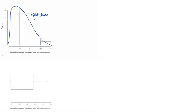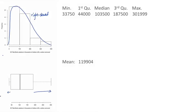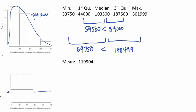The box plot shows this skew with the median slightly to the left of center of the box, and a right whisker that is much longer than the left whisker. We can also see this lack of symmetry in the five-number summary, with larger distances from the median to the third quartile and maximum than from the median to the first quartile and minimum. As well, we have a mean that is larger than the median.